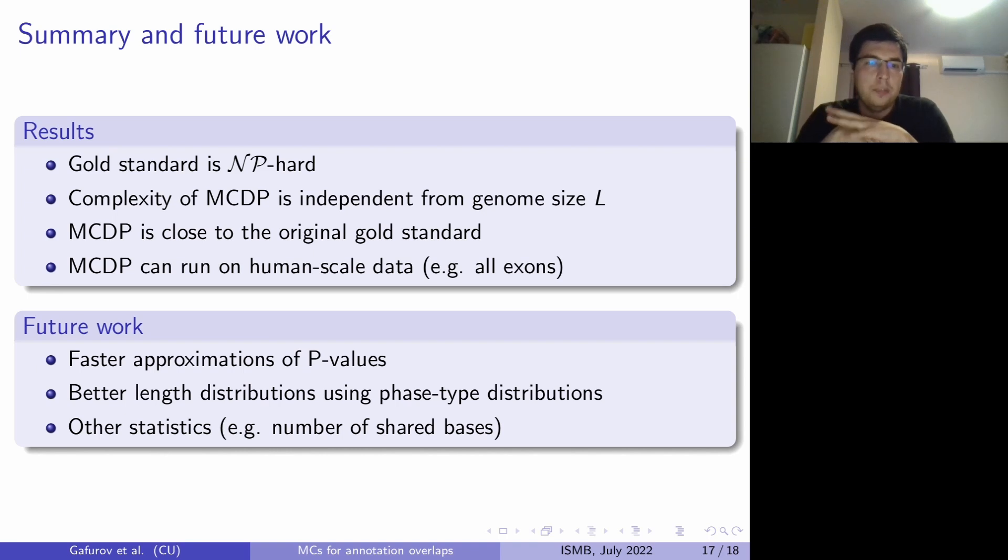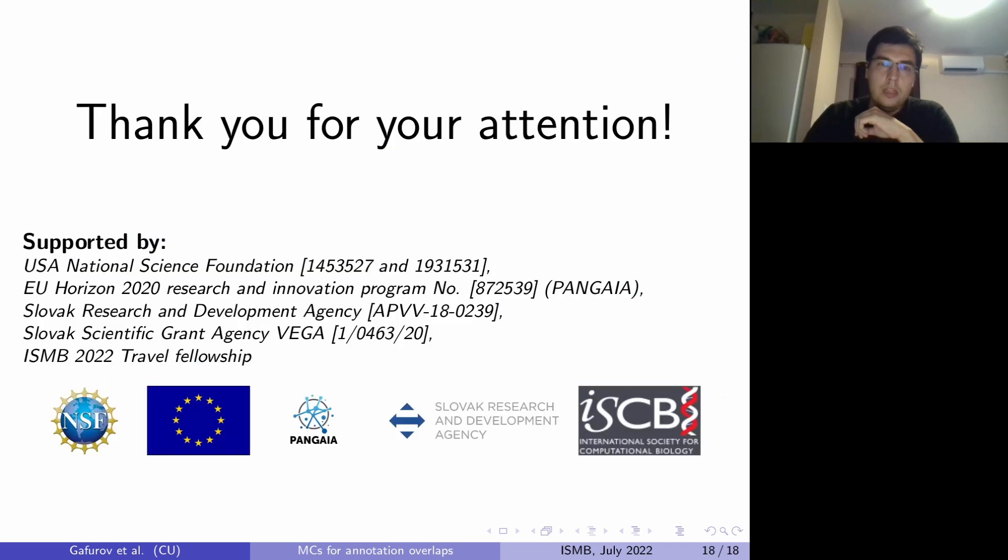In the future, we want to make it even faster by approximating the p-values instead of exact computation. We also want to model length distributions using phase-type distributions. And we want to investigate the possibility of using other statistics, for example, number of shared bases. So that's all from me. Thank you for your attention.